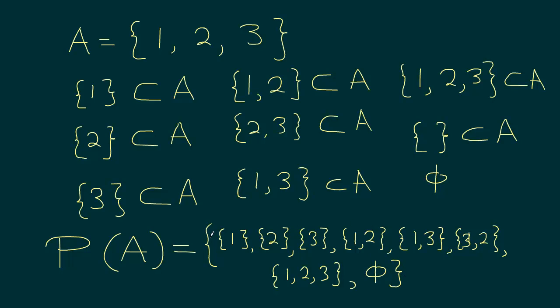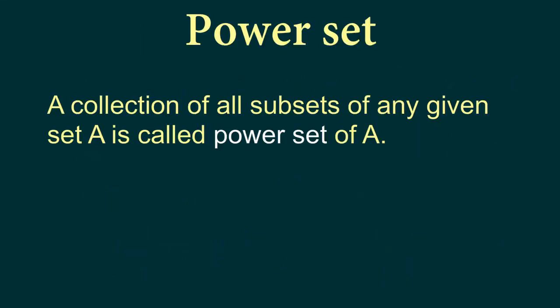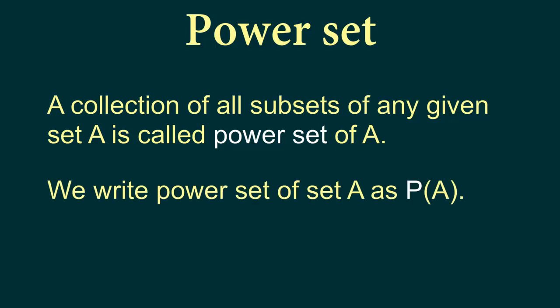So this collection that we have just written, which is a set of sets—meaning a collection that has all possible subsets of the given set—is known as the power set of A. Power set is defined as a collection of all subsets of any given set A. We write the power set as uppercase P within brackets: P(A).